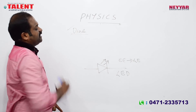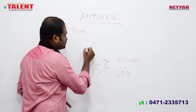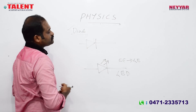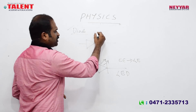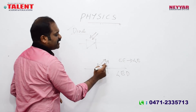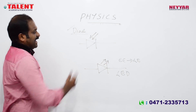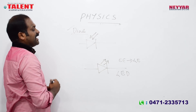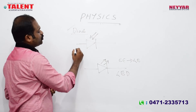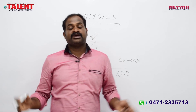The photodiode receives light energy and converts it to electrical signals. The photodiode converts light energy to electrical energy.